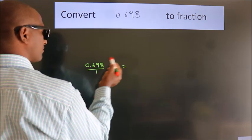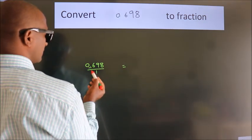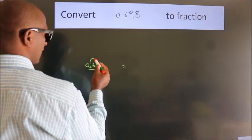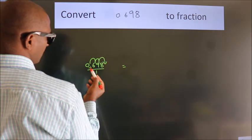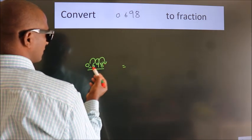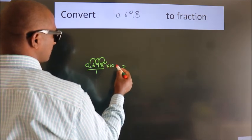To convert this to fraction, we have to move this decimal after 1, 2, 3 numbers. To move the decimal after 3 numbers, we have to multiply it with 1000.